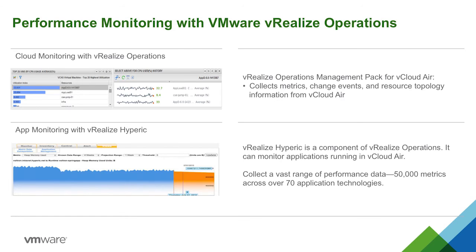For monitoring the availability of your workload, the vCloud Air portal provides common metrics for CPU, memory, and disk. But for a deeper dive, the VRealize Operations Manager Pack can collect metrics and change events for your running VMs.